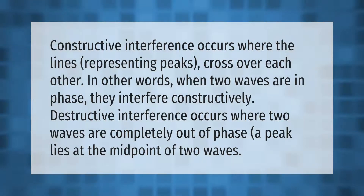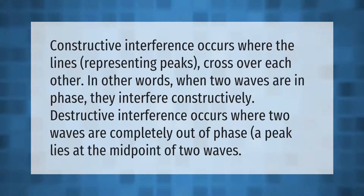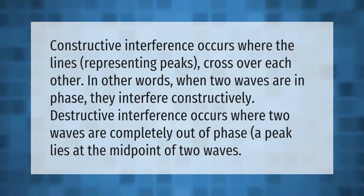Destructive interference occurs where two waves are completely out of phase — a peak lies at the midpoint of two waves.